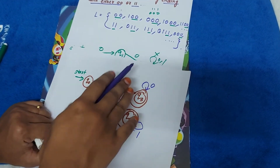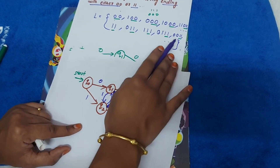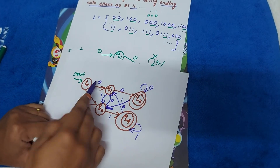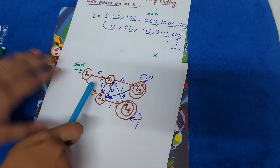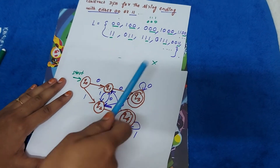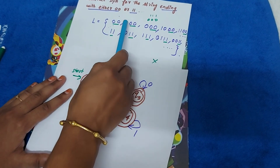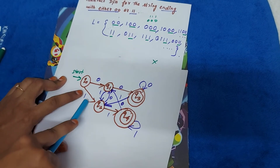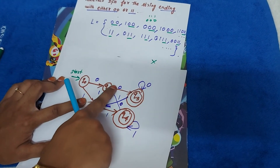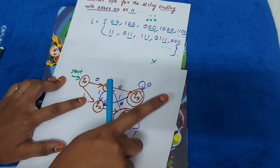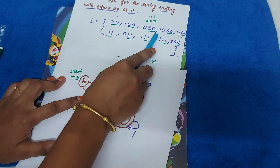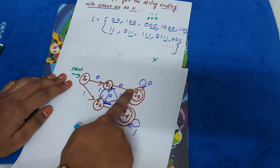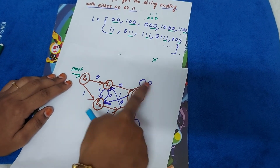Let's check acceptability of strings in our language. Zero-zero: yes, it is accepted. One-zero-zero: check one, zero, zero — yes it is accepted. Zero-zero-zero: check zero, zero, then zero — yes it is accepted.